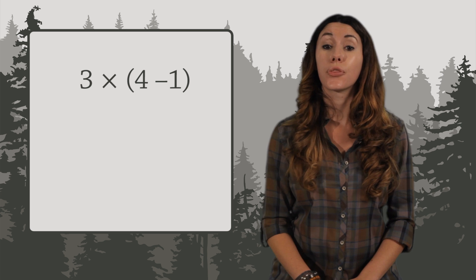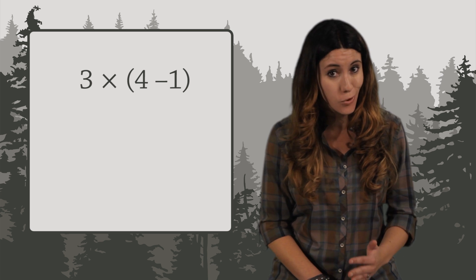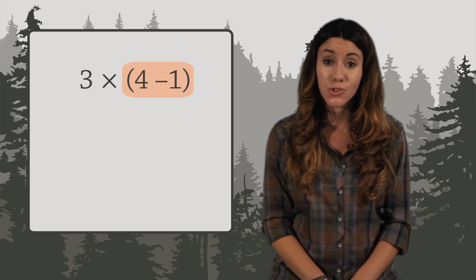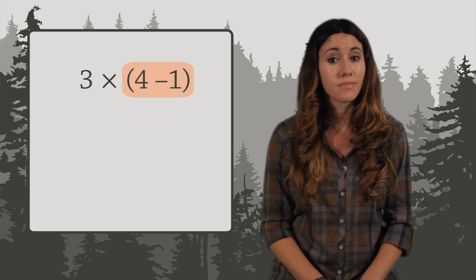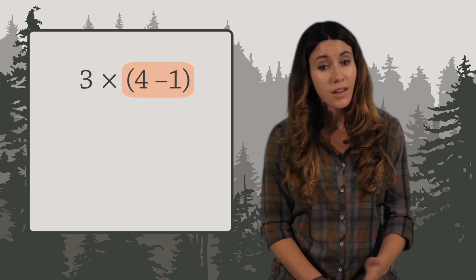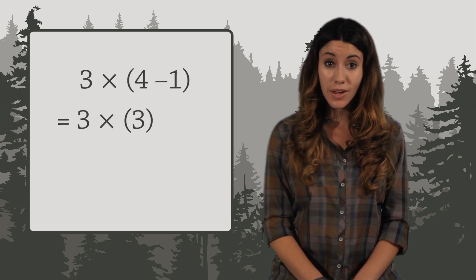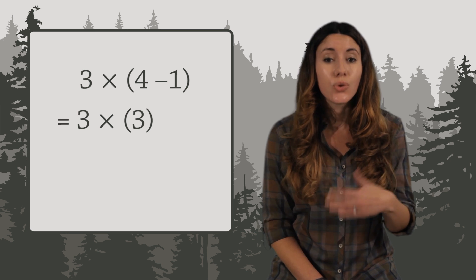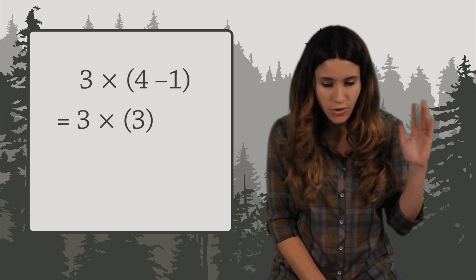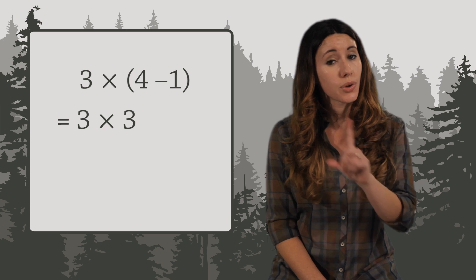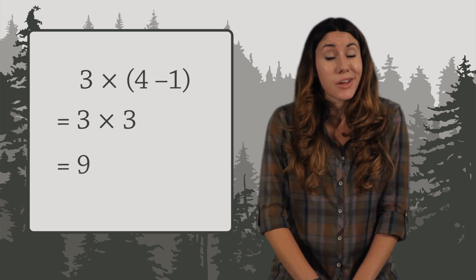Let's go ahead and compute 3 times the quantity of 4 minus 1. We first do the stuff inside the parentheses. 4 minus 1 equals 3. So we're left with 3 times 3. And don't forget, you can get rid of the parentheses once you're done with everything inside. 3 times 3 equals 9. And we're done.